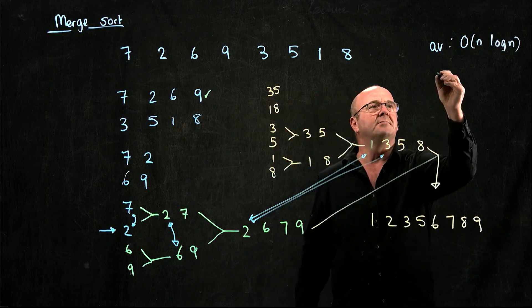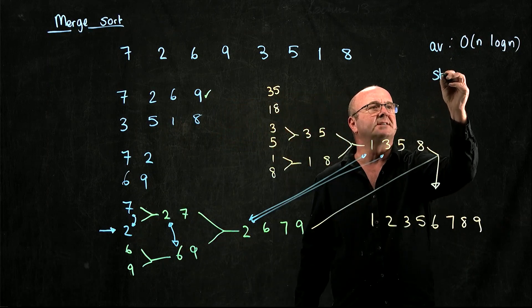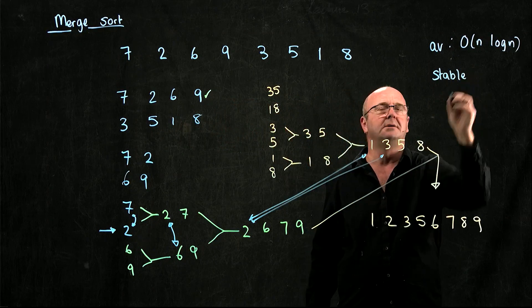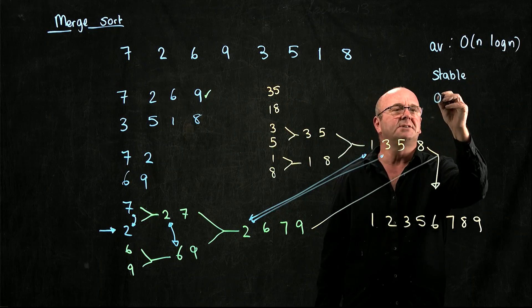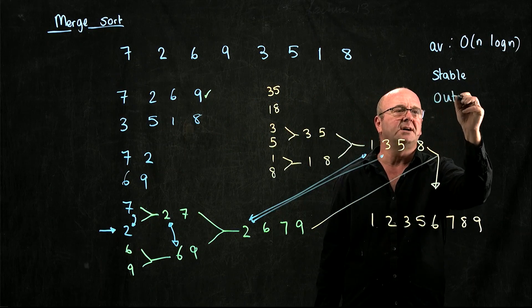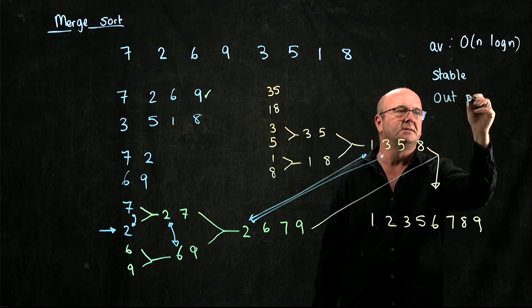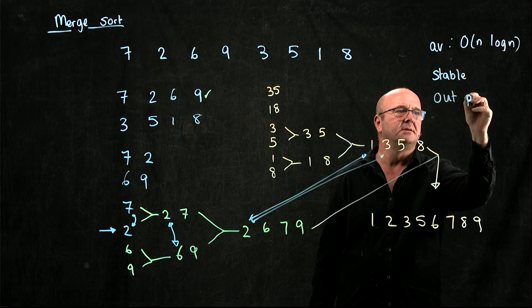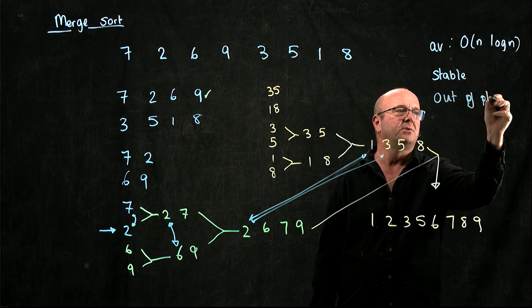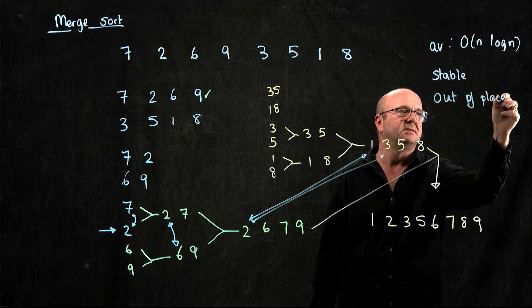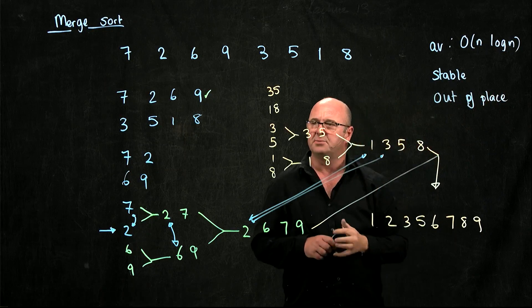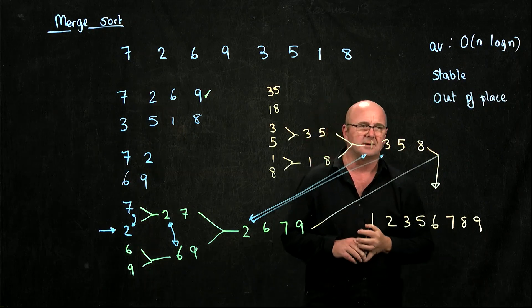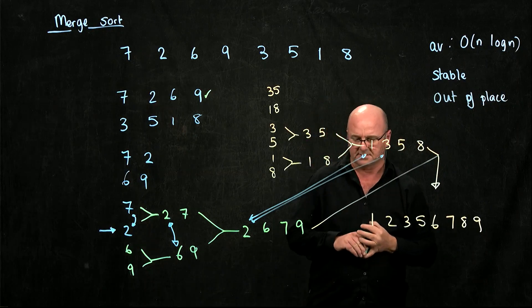The merge sort is stable. But the merge sort requires another copy of the data, as we'll see.